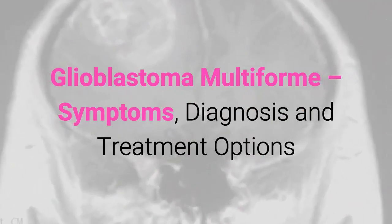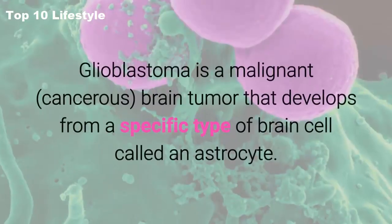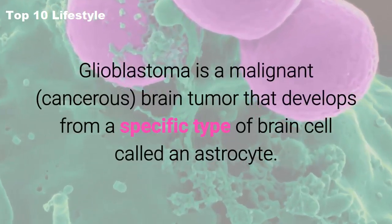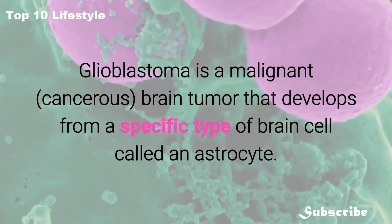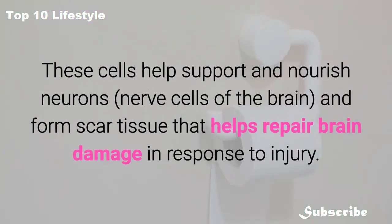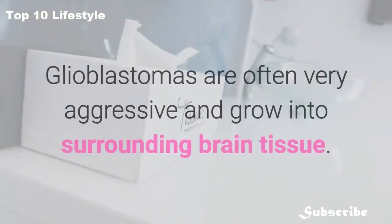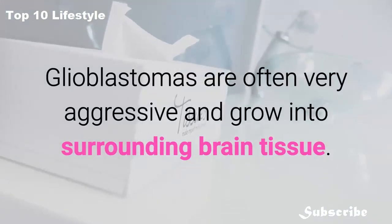Glioblastoma multiforme: symptoms, diagnosis, and treatment options. Glioblastoma is a malignant, cancerous brain tumor that develops from a specific type of brain cell called an astrocyte. These cells help support and nourish neurons — the nerve cells of the brain — and form scar tissue that helps repair brain damage in response to injury.